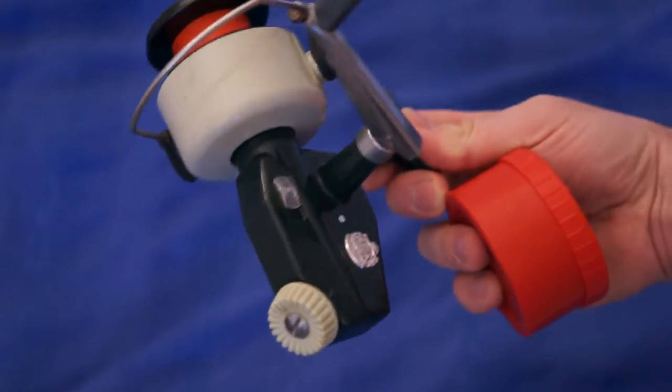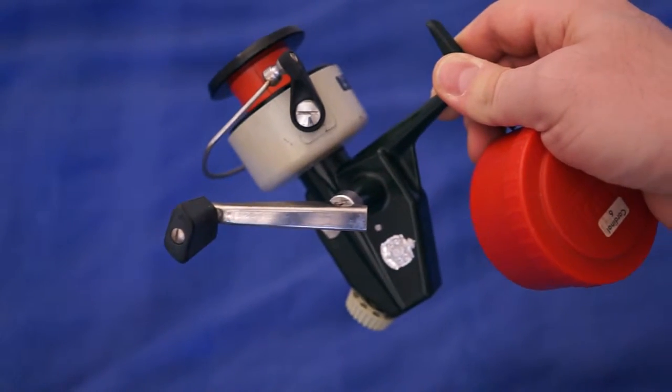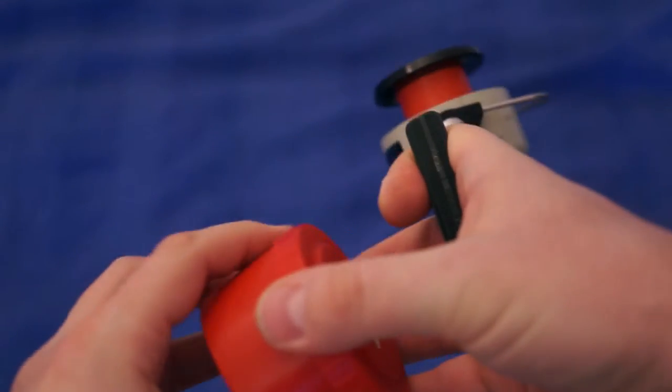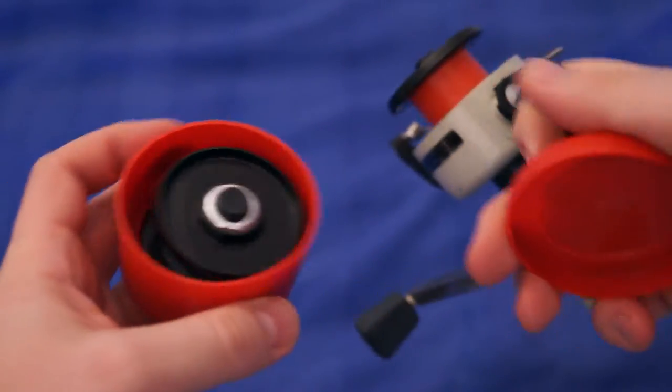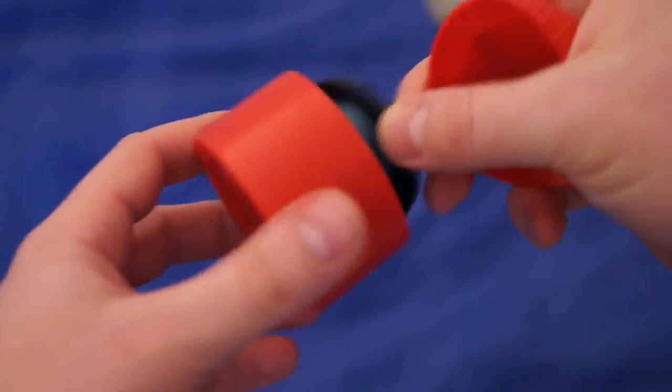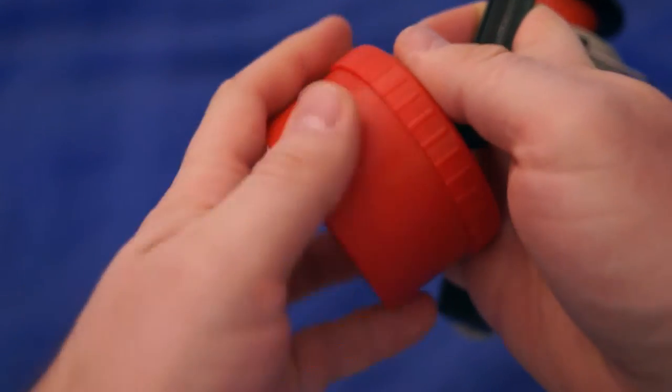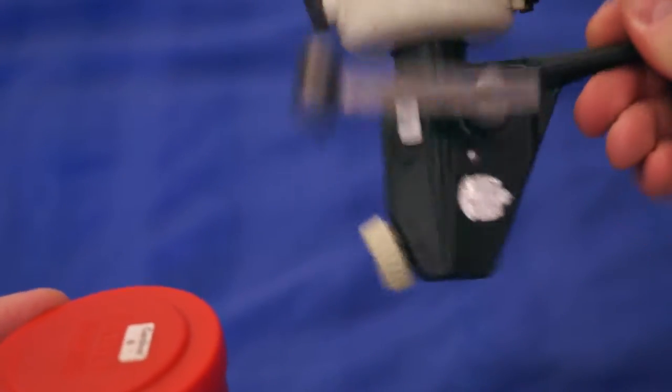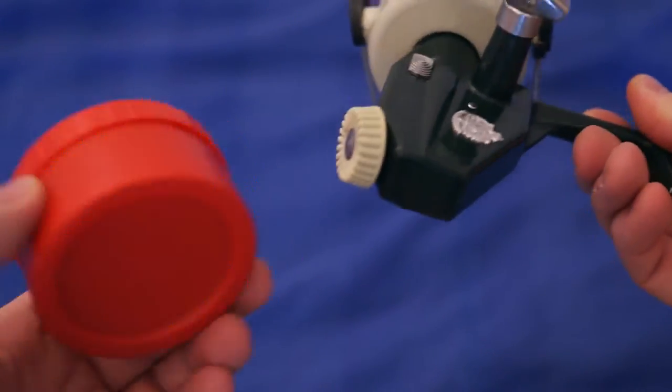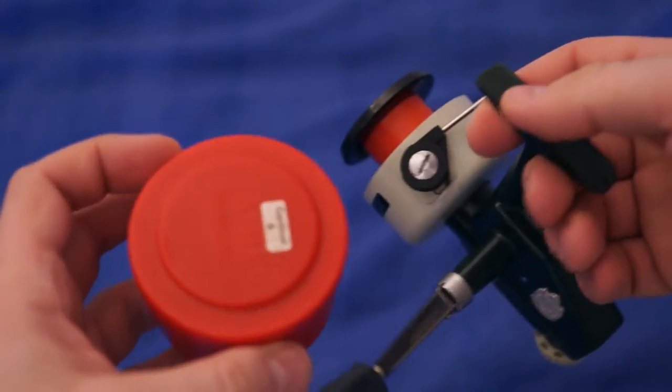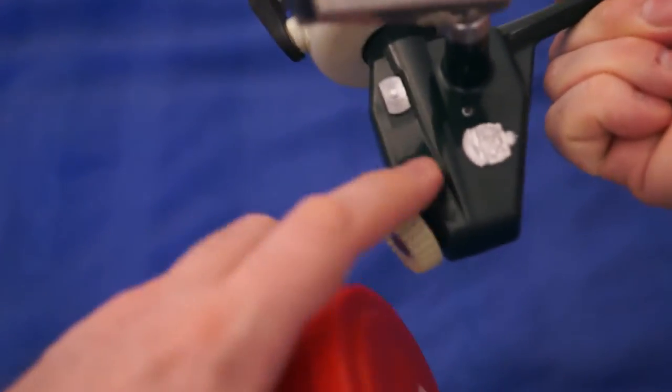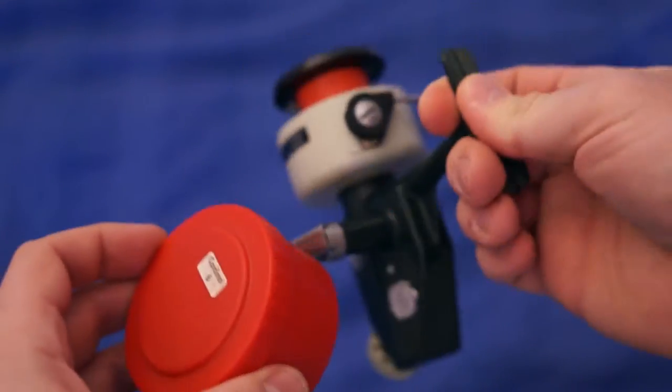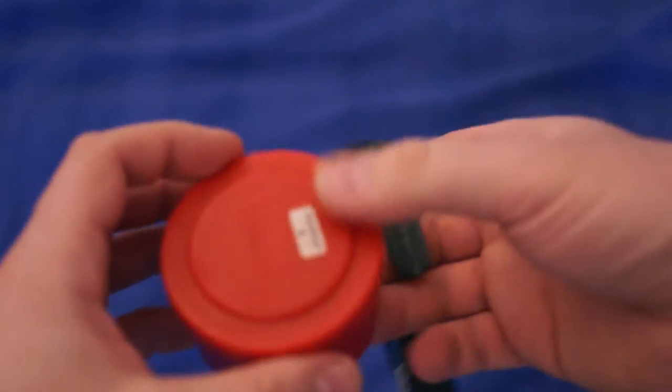I bought this one for 25 crowns with an extra spool so you can have two different line thicknesses. The used ones on eBay go for like maybe 150 to 200 dollars. I've cleaned it up a bit. There was a lot of goo and stuff. It looks pretty decent.